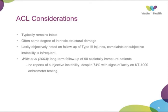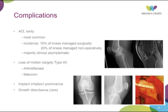Complications: the most common is ACL laxity — incidence about 10% in those managed surgically versus 20% managed non-operatively — though the majority are clinically asymptomatic and need no further intervention. Loss of motion, usually in type 2 and type 3 managed surgically, is due to arthrofibrosis or malunion causing a block to full extension. Implant irritation and prominence — as seen here, screws can back out and cause a block to full extension, chondral wear and damage. Growth disturbance is also a possible complication, though quite rare.